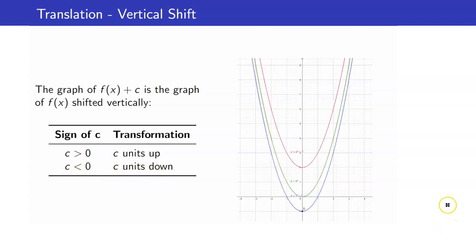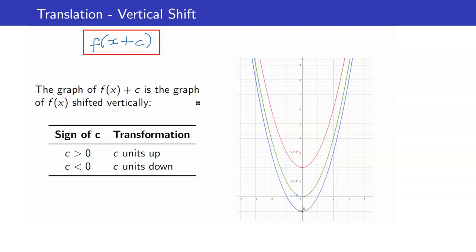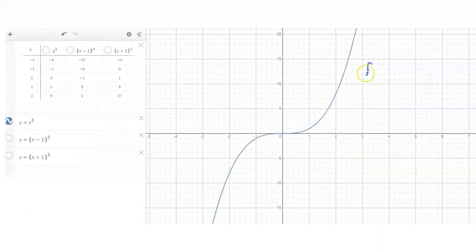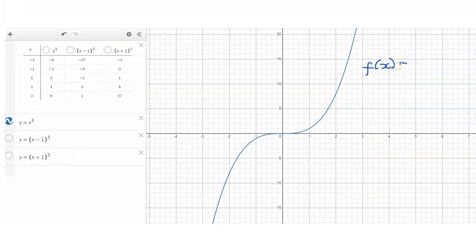Here are the graphs we discussed. Next, we want to consider the graph of f of x plus or minus c — but take note, this is different from the first one. There, c was added to f of x, but in this case c gets added to x, and then you evaluate the function there. Here, let us consider the graph of f of x equals x cubed, given by this blue graph over here.